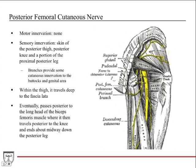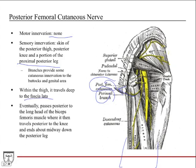The posterior femoral cutaneous nerve — here it's labeled coming out of the greater sciatic foramen, just inferior to the piriformis muscle. It does not do any motor innervation. Sensory innervation: it does skin of the posterior thigh, posterior knee, and a portion of the proximal posterior leg — a lot of posterior cutaneous innervation. There are also branches providing cutaneous innervation to the buttocks and genital region. Within the thigh, it travels deep to the fascia lata.